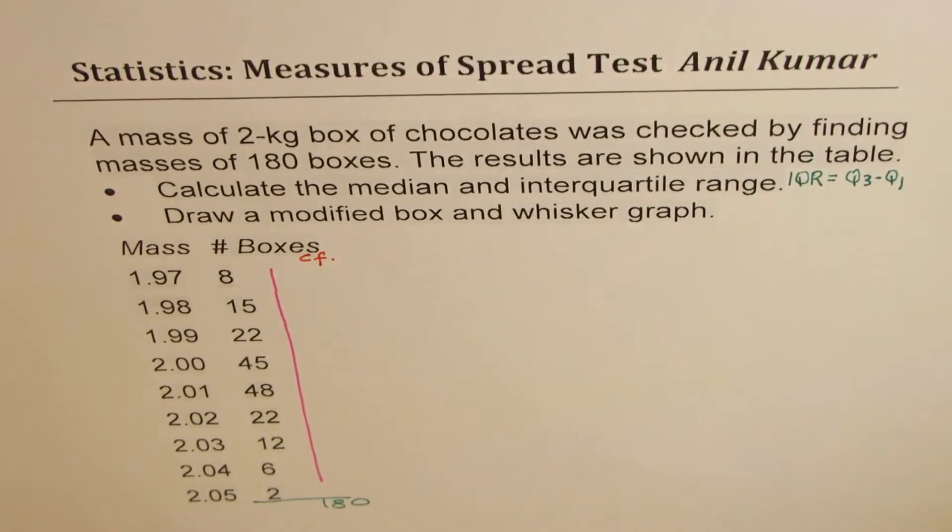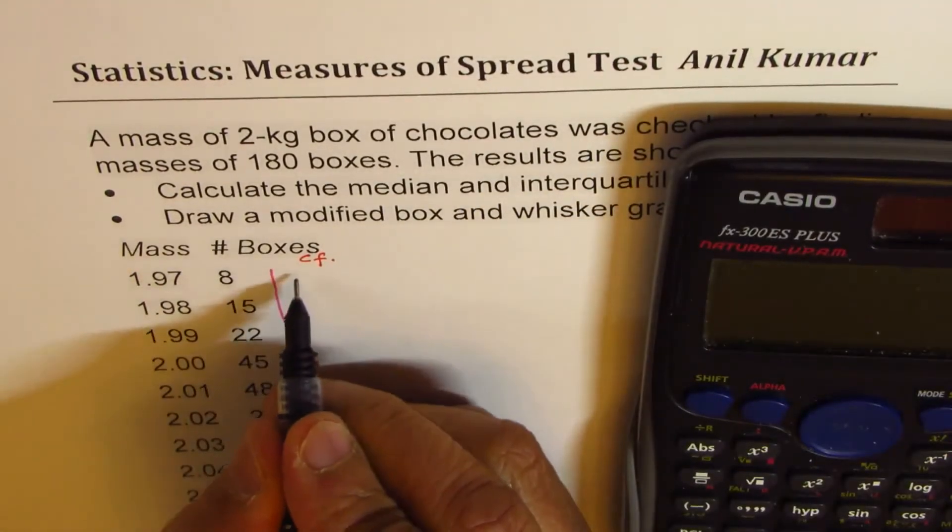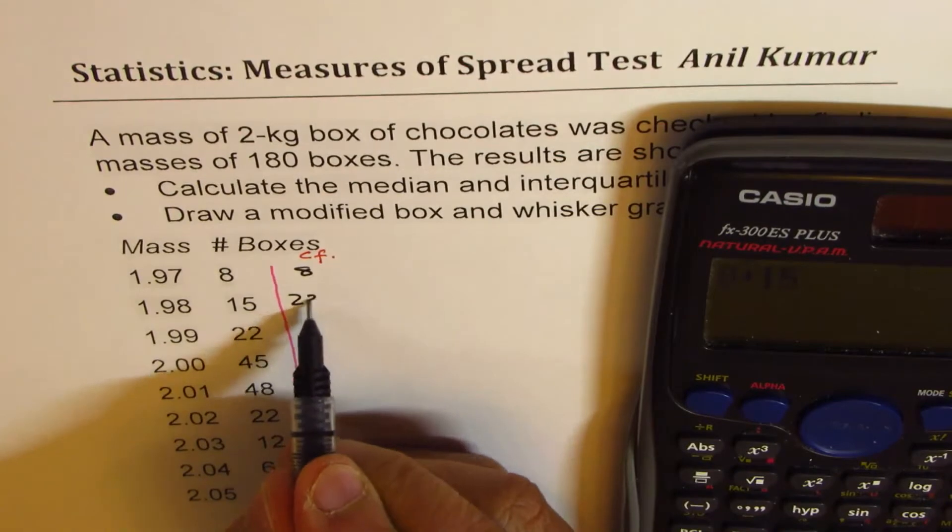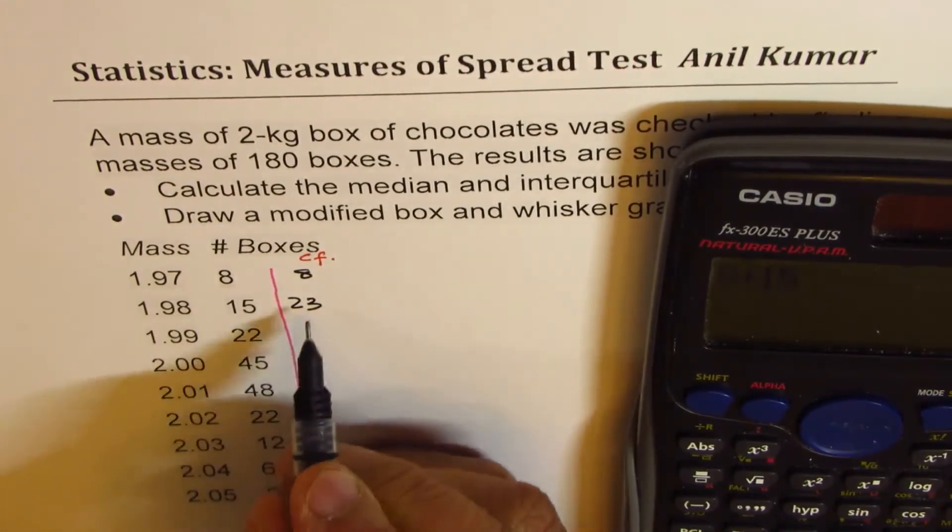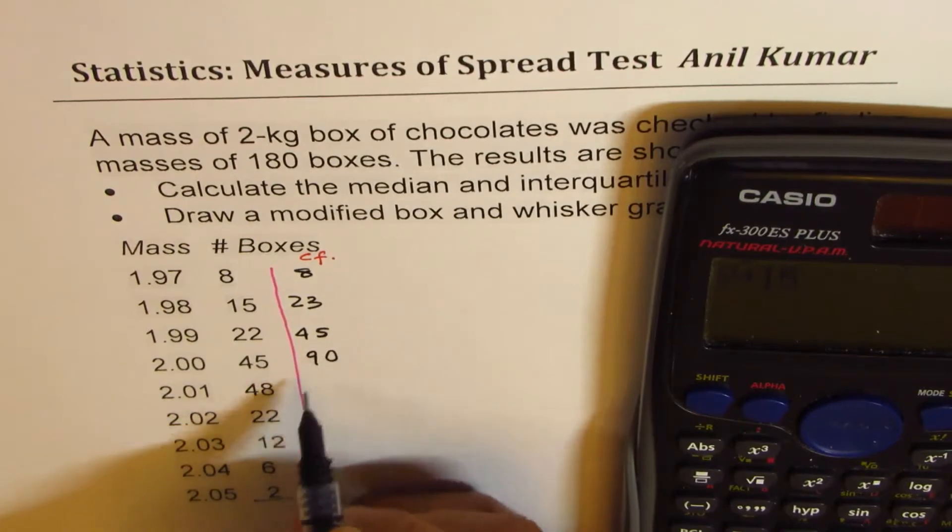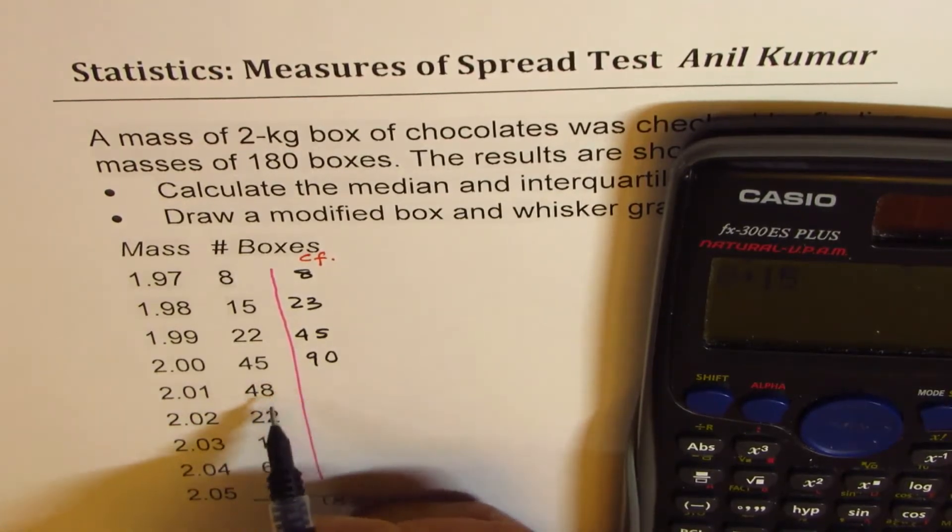So let's add one by one the values. We will begin with 8, now 8 plus 15 is equal to 23, then we will add 22 so we get 45, add 45 we get 90.